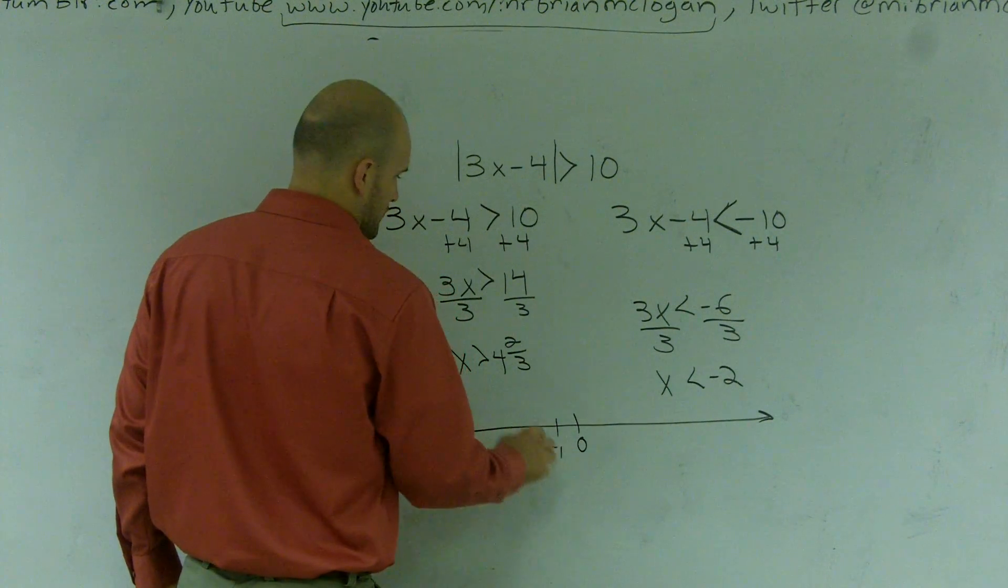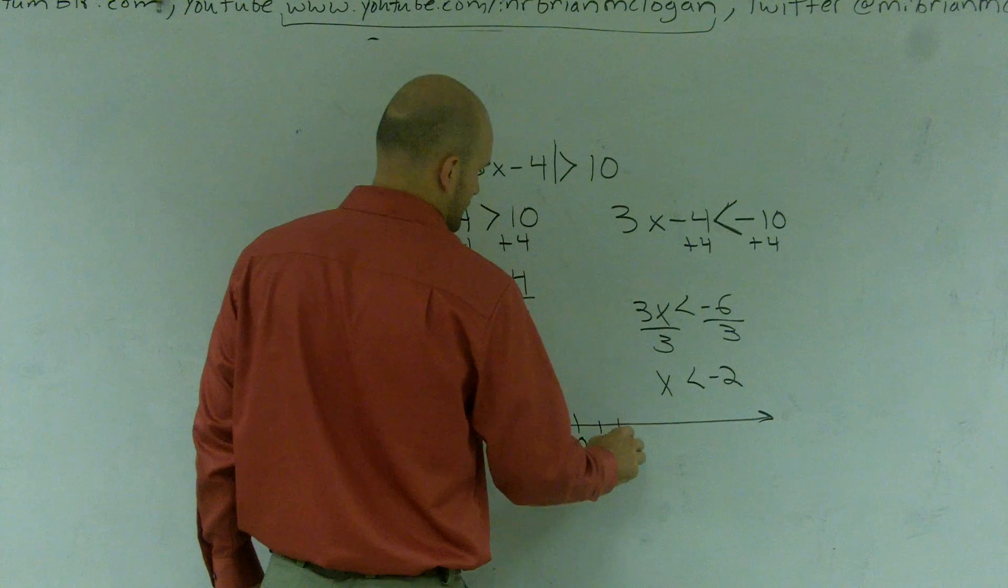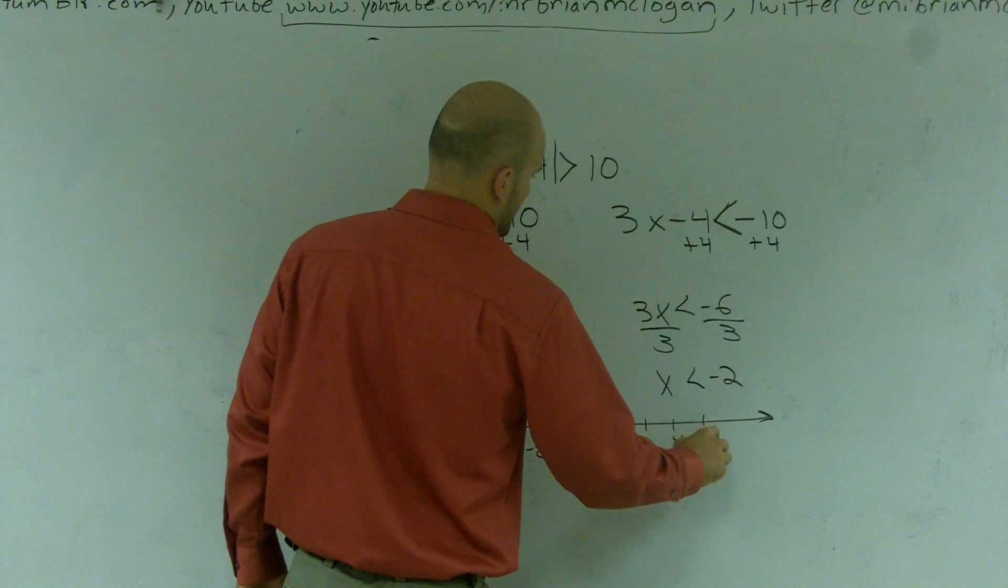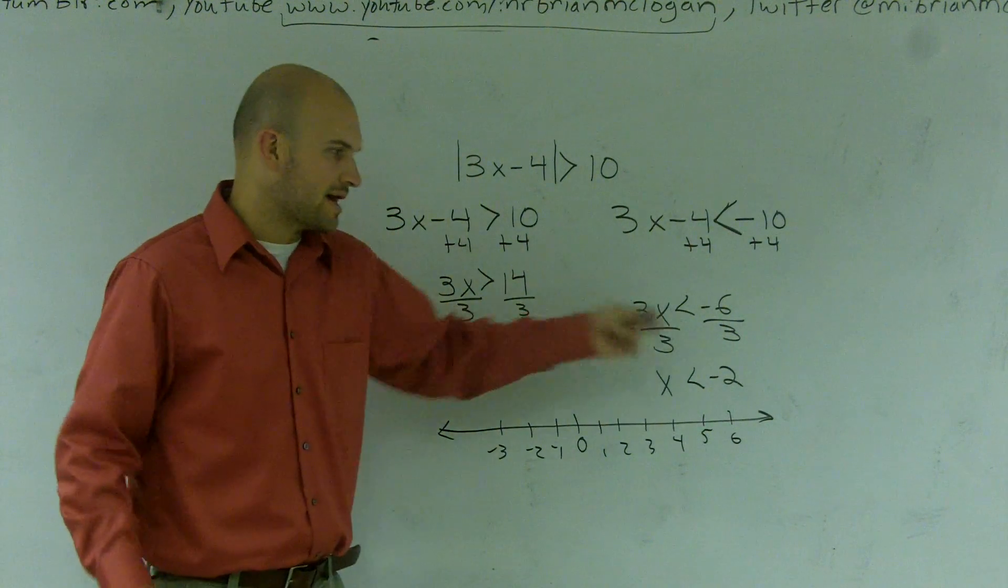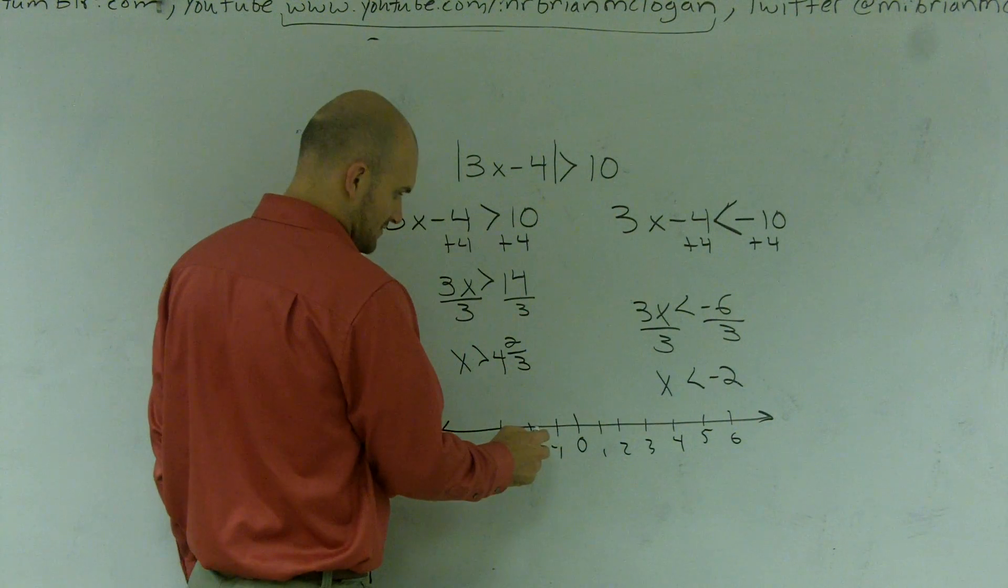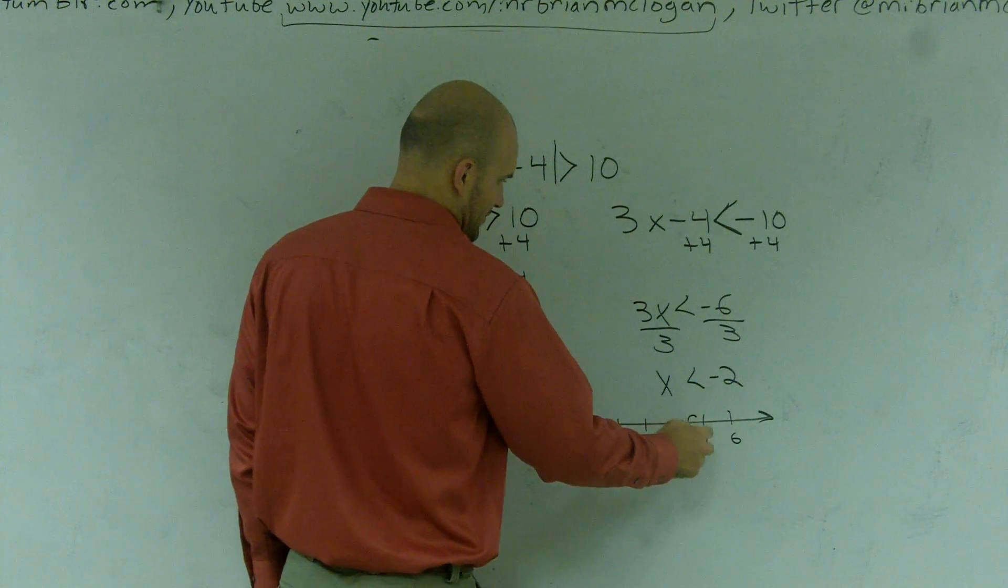0, negative 1, negative 2, negative 3, 1, 2, 3, 4, 5, 6. So the first thing I'm going to do is I'm going to plot both these points. So I'm going to plot negative 2 and I'm going to plot 4 and 2 thirds, which would roughly be about there.